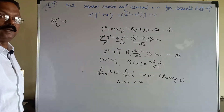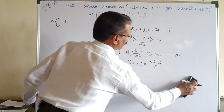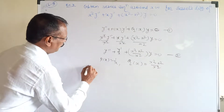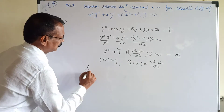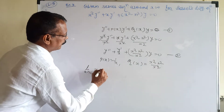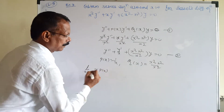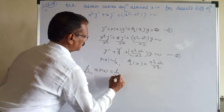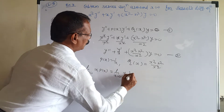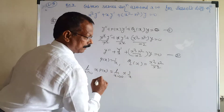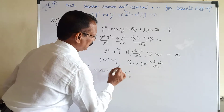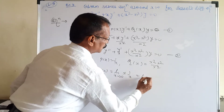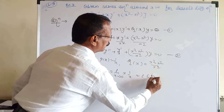Now let us check the nature of the singular point. We check lim(x→0) x·P(x). Since P(x) = 1/x, we get lim(x→0) x·(1/x) = 1, which is a finite number.